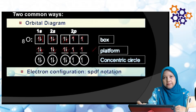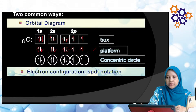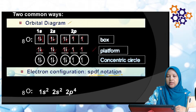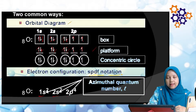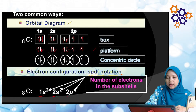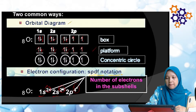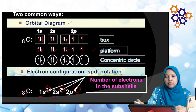Cara kedua untuk tulis electronic configuration adalah SPDF notation. Untuk oksigen, kita tulis 1s², 2s², 2p⁴. Angka 1 dan 2 tu adalah N (principal quantum number), energy level dia. S dan P adalah L (azimuthal quantum number). Angka 2, 2, 4 adalah bilangan electron yang diisi: 1s ada 2 electron, 2s ada 2 electron, 2p ada 4 electron. Total electron adalah 8.